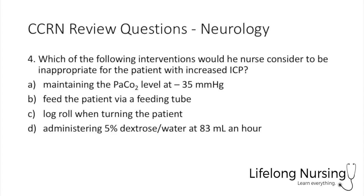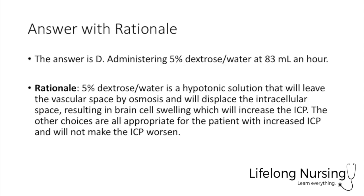Number 4. Which of the following interventions would the nurse consider to be inappropriate for the patient with increased intracranial pressure? The answer is D, administering 5% dextrose and water at 83 mL an hour. This is a hypotonic solution that will leave the vascular space by osmosis and most likely displace into the intracellular space, resulting in brain cell swelling, which will increase ICP. All other choices will not worsen the ICP.